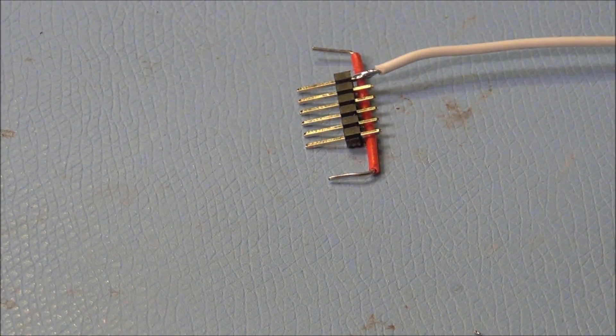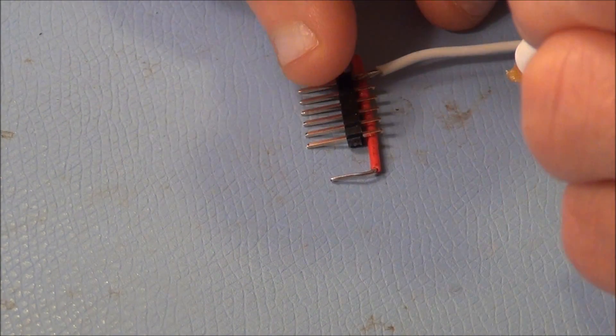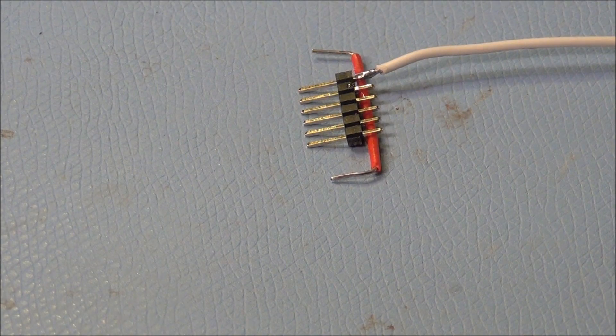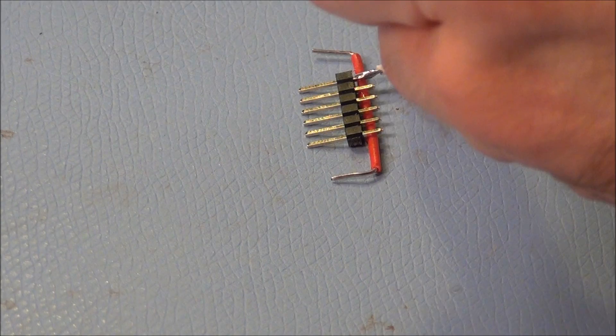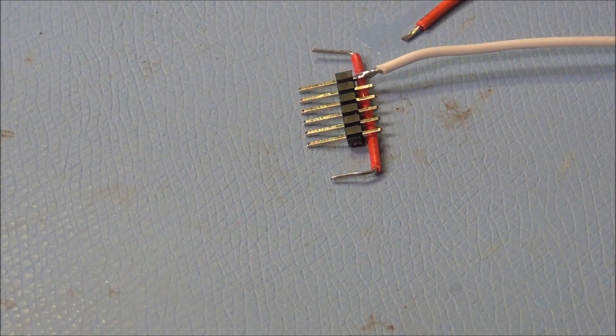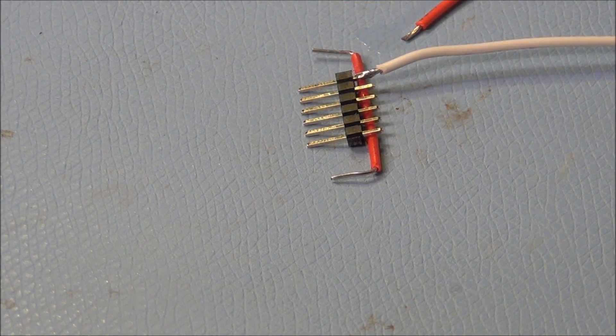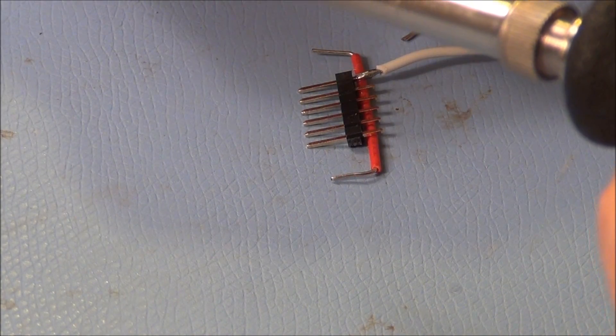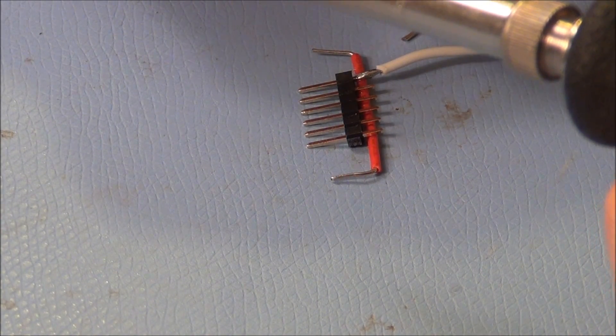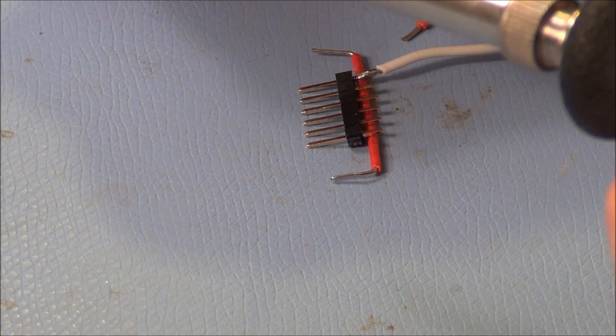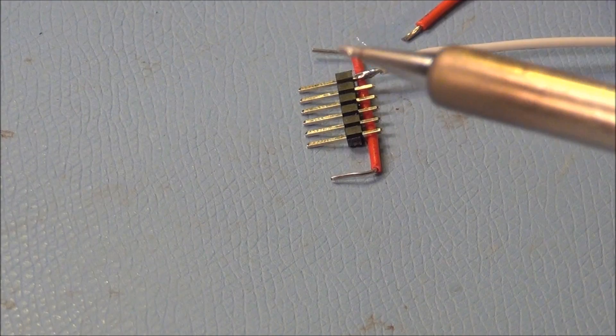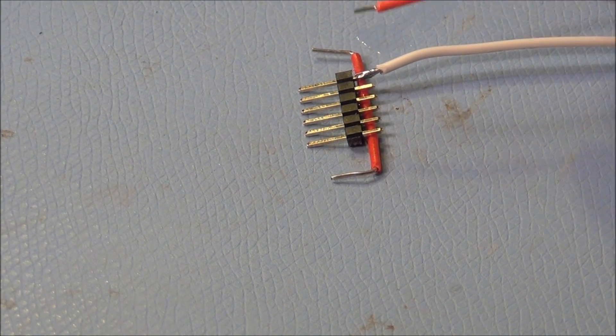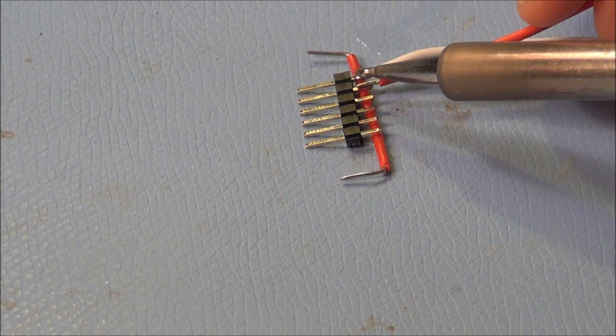So now we're basically going to repeat the same process. Flux pen first, always. Then thoroughly flux the wire. Add a little bit of solder on our iron tip. I've gobbed it on there too much that time. And apply our solder.